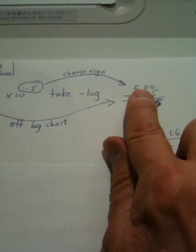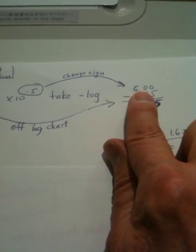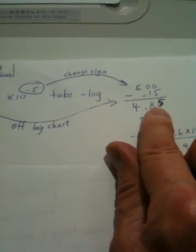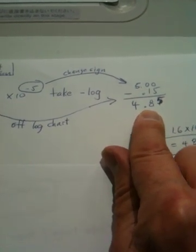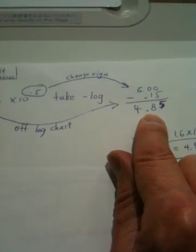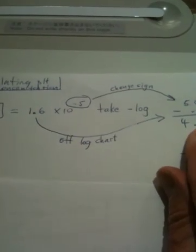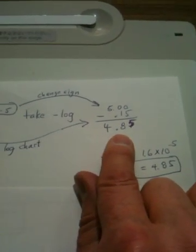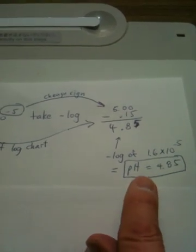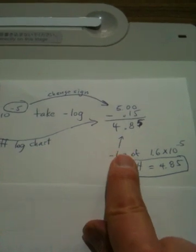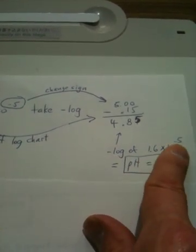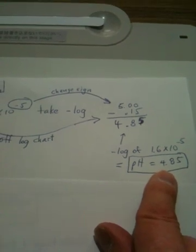This number is subtracted from the original log that we got of the 10 to the minus 5, and we wind up with the actual log for the entire expression here, 1.6 times 10 to the minus 5. The actual log is 4.85, and that's our final pH.